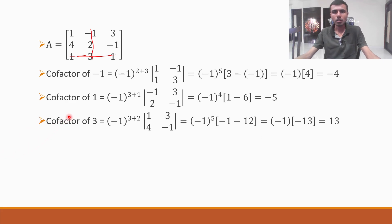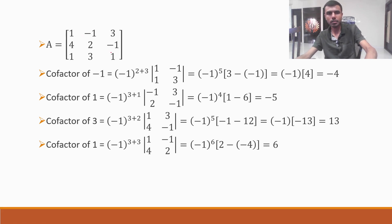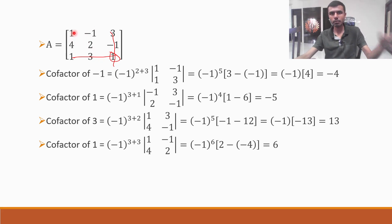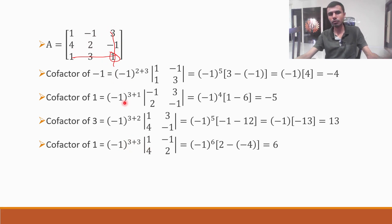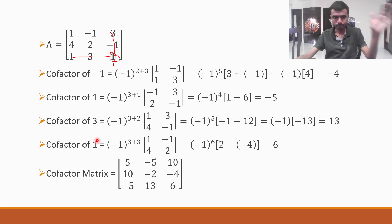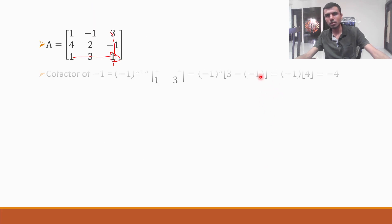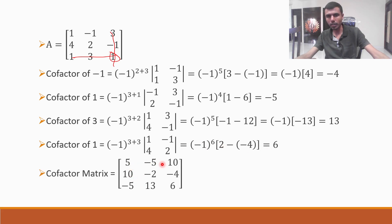Cofactor of element 1 in third row, third column — position (3,3). Minus one to the power 3 plus 3, into det of [1, -1; 4, 2]. Two ones are 2, minus four into minus one is plus 4. So 2 plus 4 is 6. Minus one to the power even number is plus one. So cofactor is 6. The cofactor matrix is: [5, -5, 10; 10, -2, -4; -5, 13, 6].